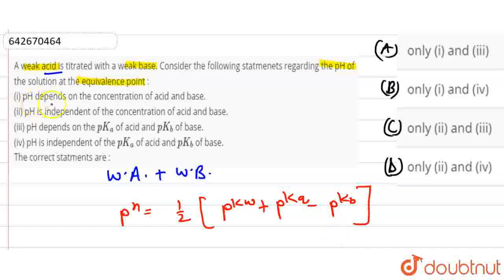First statement says pH depends on concentration. This is wrong because PKA value and PKB value depends on the acid and base themselves, not concentration. So statement one will cancel out, okay?